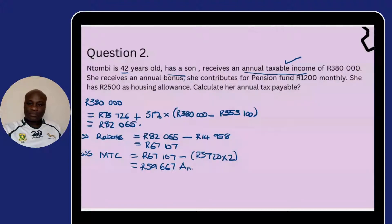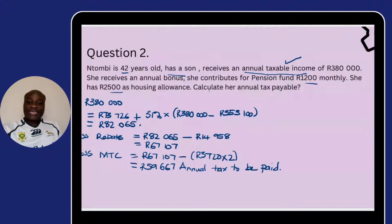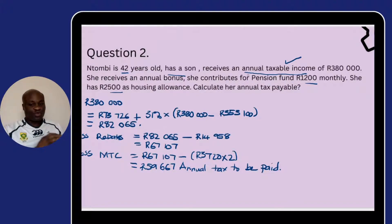This is the annual tax to be paid. When you reach this point, you know you are done. Everything else mentioned — like the pension fund and UIF — will be negated by the fact that we were given the annual taxable income. So it's either they give you the annual taxable income or the monthly taxable income. The procedure is the same: when given the taxable income, we begin at the tax brackets; if not given, we start from gross income until we answer what the question wants.